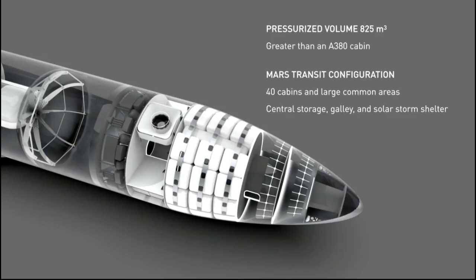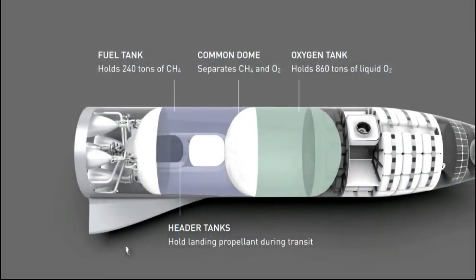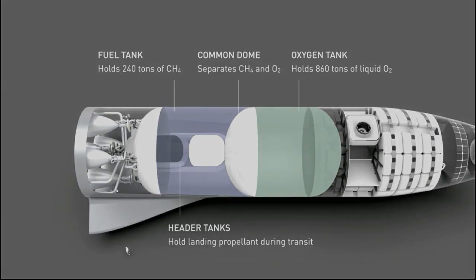In a Mars transit configuration, since you'd be taking three months in a really good scenario, but maybe as much as six months, this is where the propellant is located. This is sub-cooled methane and oxygen.